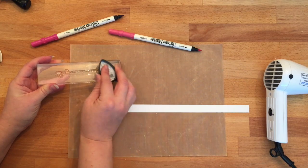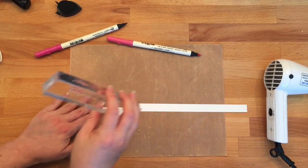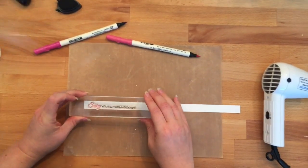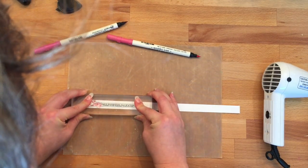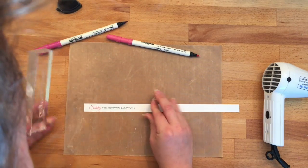Next, we're going to use the Memento Tuxedo Black Cat Eye ink pad and stamp the rest of the saying. The Cat Eye is nice because you can get in really precise areas. Then we're going to stamp it onto a strip of white card stock.